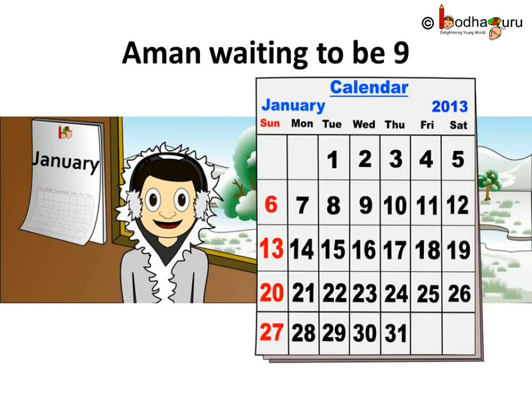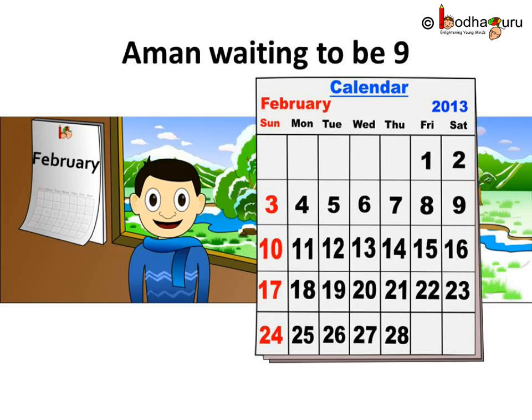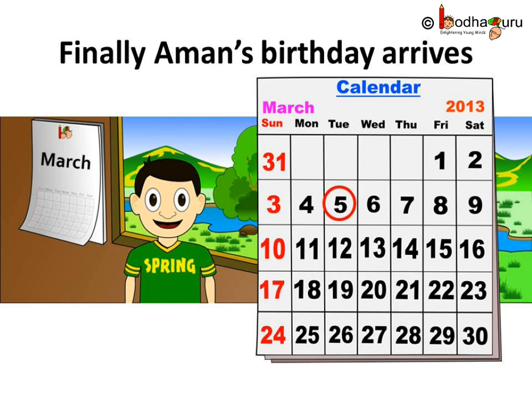So, Aman has to wait for the month of January to finish, then February, and then comes March. He has to wait 2 months from now for his birthday. March is Aman's favourite month as his birthday is in March and he gets lots of gifts, wishes and love from friends and family.